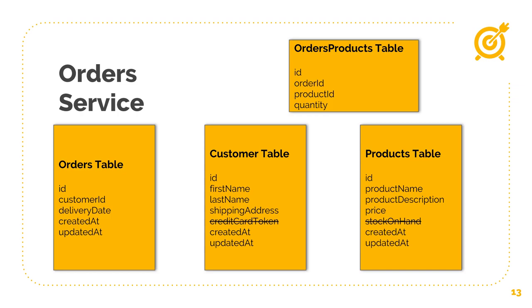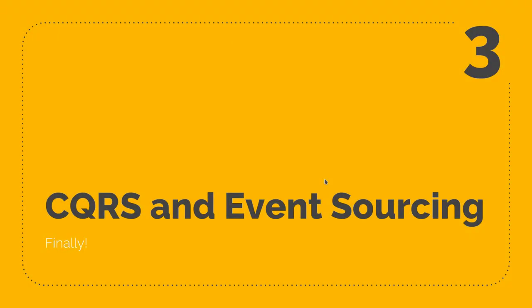Now the next question comes along: how do we make sure that we keep the customer and products table data synchronized correctly with the customer and product service? This is where CQRS and event sourcing come in, finally, to help us solve these kinds of problems.